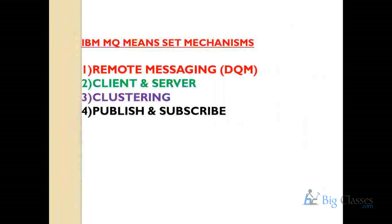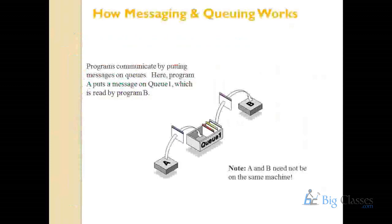IBM MQ means store and forward mechanism. IBM MQ means a set of services. IBM MQ means a set of messaging mechanisms. IBM MQ is a resource manager — it manages resources, which are queues. Regarding how messaging and queuing works: one program defines business data as a message and sends it to IBM MQ server; another program gets that business data from IBM MQ server. Communication might be one-way or two-way.